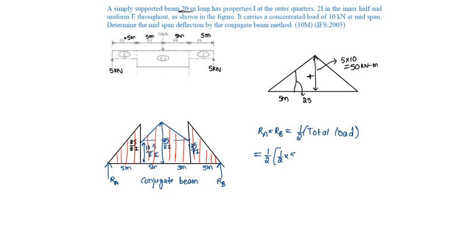Half base is 5 into height is 25 by EI. It is 2 triangles so taken twice, plus 12.5 by EI into 10 is the rectangular portion, plus upper triangle is half base is 10 into height is 12.5 by EI. On simplifying, it becomes 156.25 by EI. So the reaction here is 156.25 by EI and Rb is also equal to 156.25 by EI.